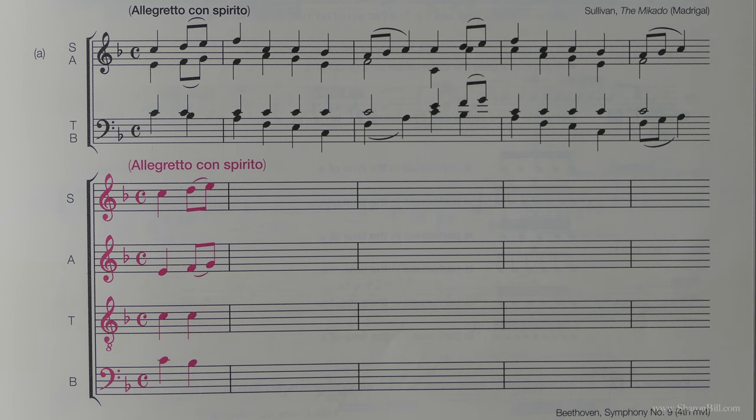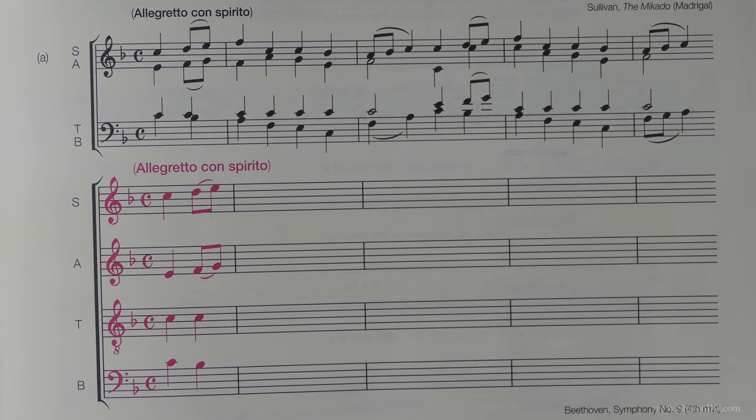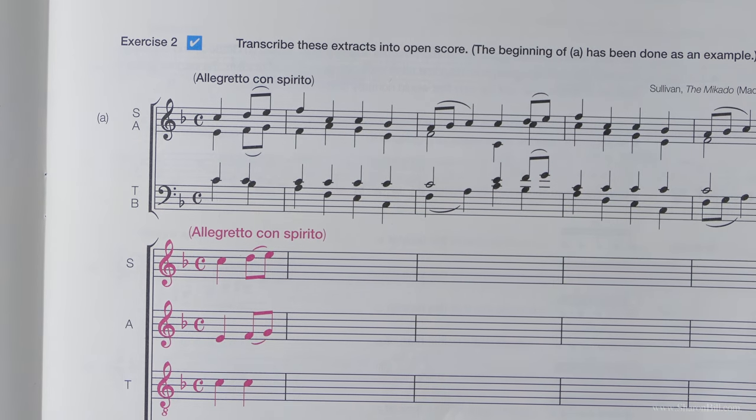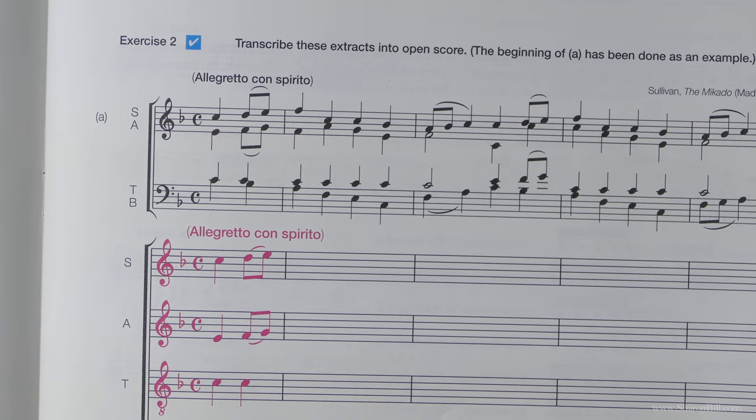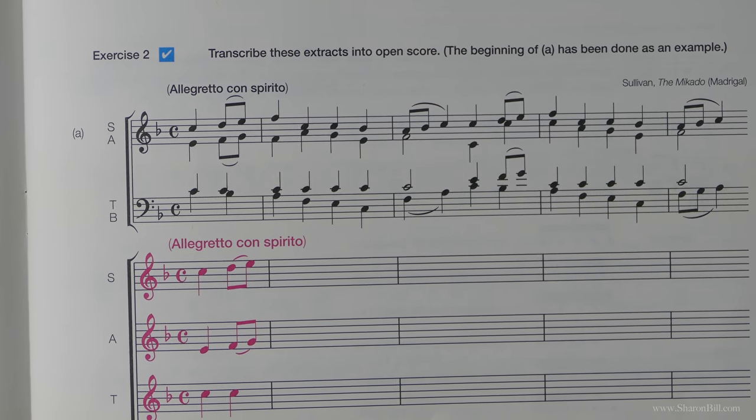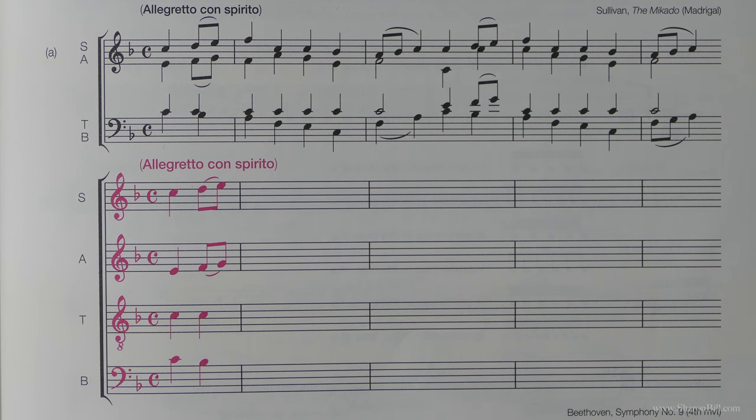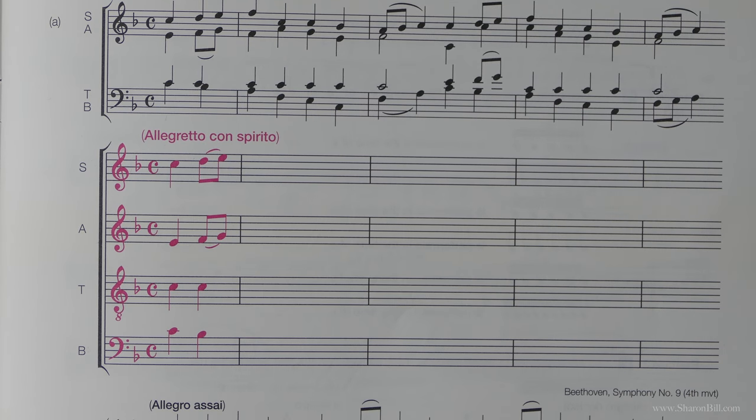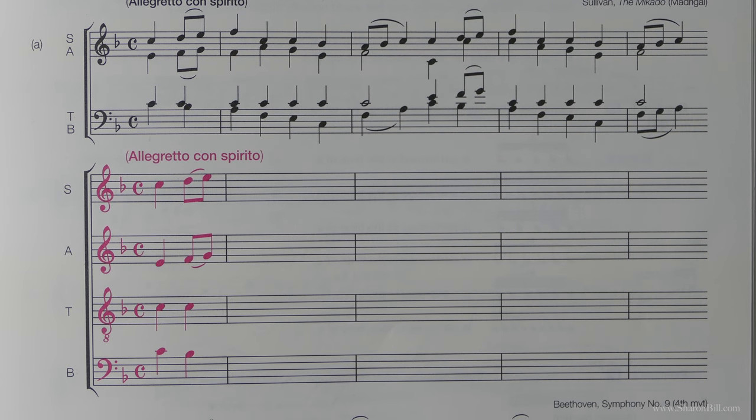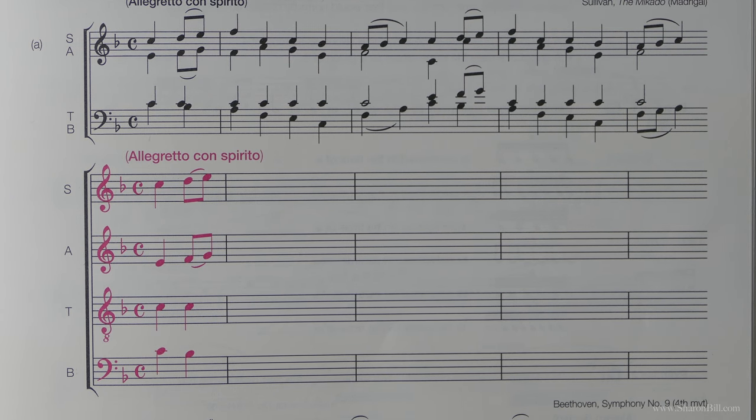Now we're going to be looking at open score. Make sure you've read through the information on page 23, and you'll find reminders in the PDF document. A choir may be written in open score, perhaps if you're not pressed on space or if the voice parts have really complicated lines. Then they're going to need more space, so open score is beneficial for that.